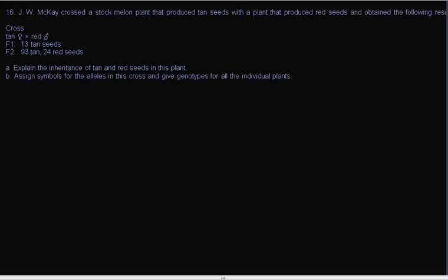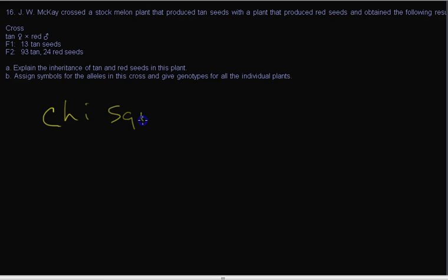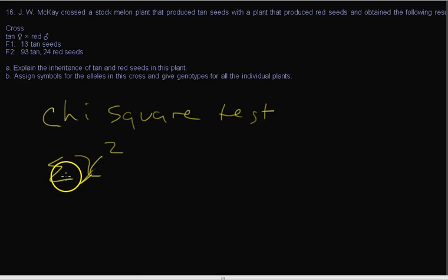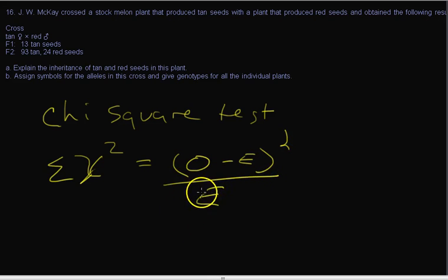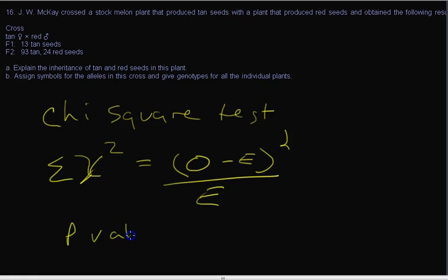We're going to go a bit further and use a chi-square test to see if this really is a 3 to 1 ratio. A chi-square test is the sum of several chi-square values — sigma chi-square — which equals the sum of (observed minus expected) squared, divided by the expected. We do that for all categories, come up with a chi-square number, and find a p-value using a chi-square chart.